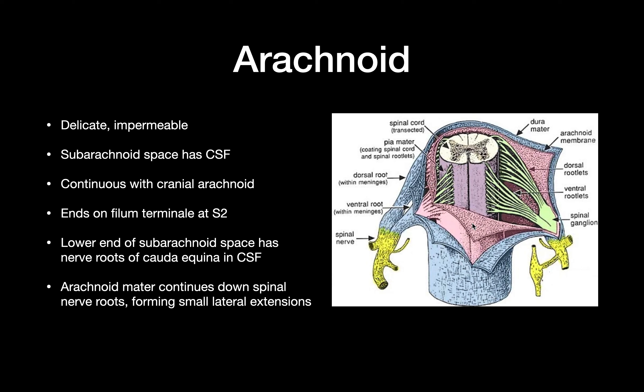The arachnoid membrane is delicate and impermeable, and the subarachnoid space contains CSF. The arachnoid is continuous with the cranial arachnoid and ends on the filum terminale at S2. The lower end of the subarachnoid space contains the nerve roots of the cauda equina, bathed in CSF. The arachnoid continues down the spinal nerve roots and forms small lateral extensions.